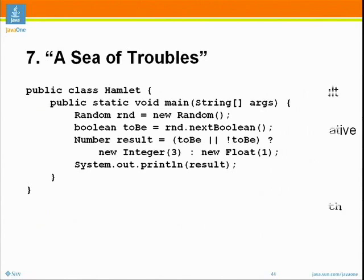So I have one for you: 'A Sea of Troubles.' We're going to create a random Boolean. And we're going to ask whether to be or not to be — that is the question. Based on that, we're either going to get the Integer 3 or a Float 1.0 and print out the result.